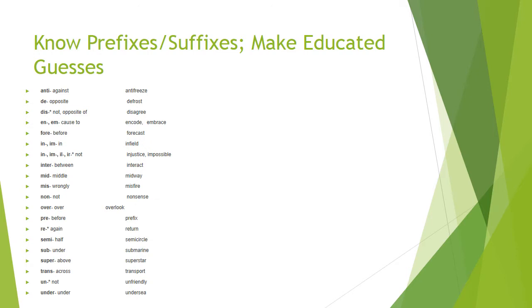Also look for context clues. Oftentimes they're going to give you a definition within the sentence itself. For example: 'One of the characters in Milton Mariyama's novel is considered blank because he deliberately defies an oppressive hierarchical society.' To deliberately defy something would be to be rebellious. For double-blank questions, look for synonyms and rule out words you know are antonyms—if you don't know a word, perhaps you know its opposite, and that'll help you rule some answers out.